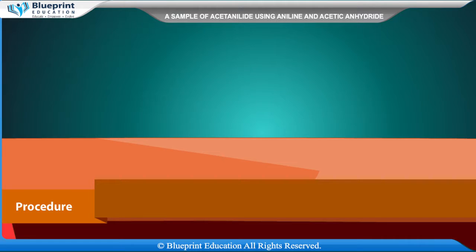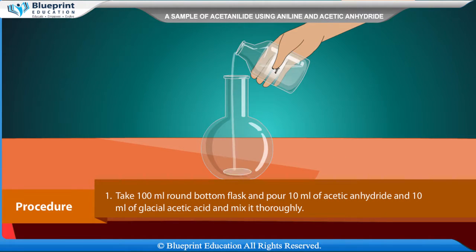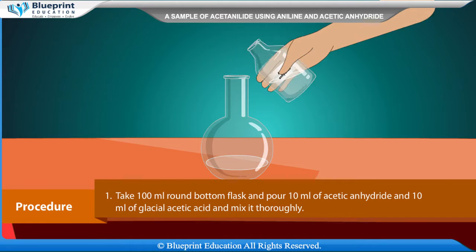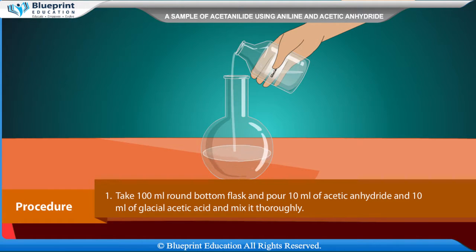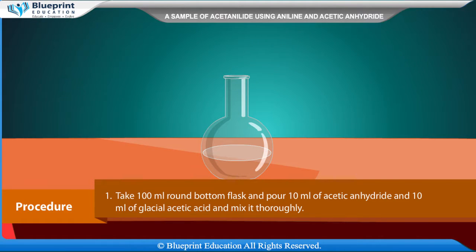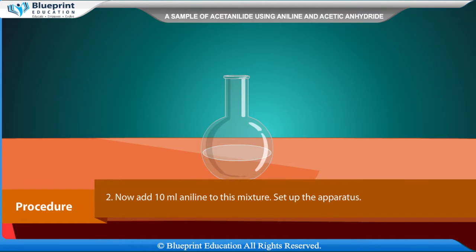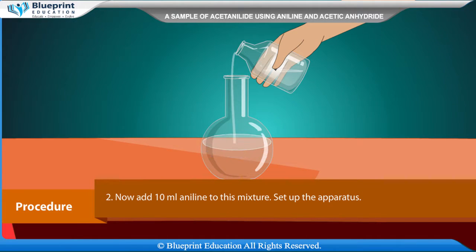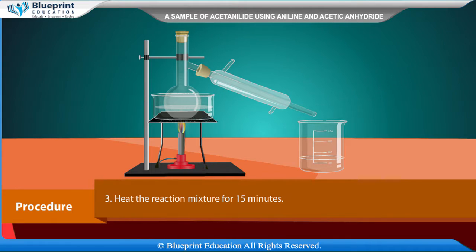Procedure: Take a 100 ml round bottom flask and pour 10 ml of acetic anhydride and 10 ml of glacial acetic acid, and mix it thoroughly. Now add 10 ml aniline to this mixture, set up the apparatus, and heat the reaction mixture for 15 minutes.